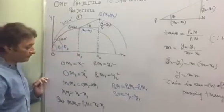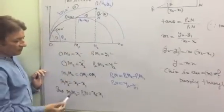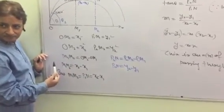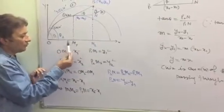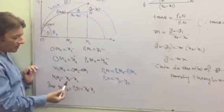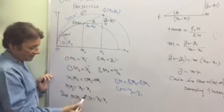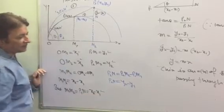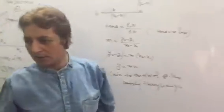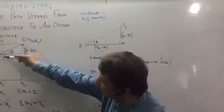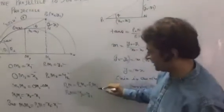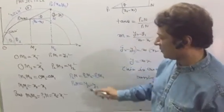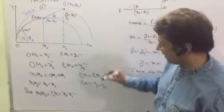Now what is M1M2? That is OM2 minus OM1, which is x2 minus x1. So M1M2 equals P1N, which is x2 minus x1. What is P1M1? That is y1. What is P2M2? That is y2.